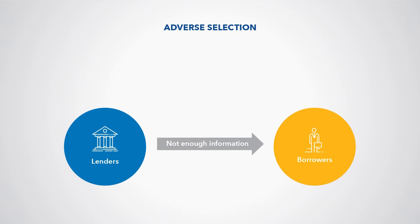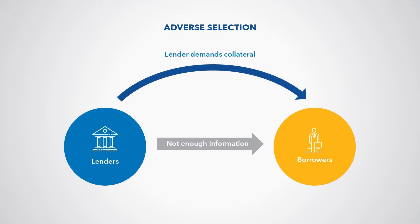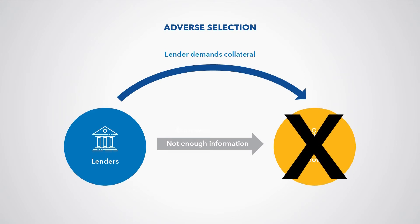How does this problem lead to financial exclusion? If lenders try to protect themselves by demanding collateral, then some low-risk individuals who are too poor to post the necessary collateral won't be able to borrow. Another example of adverse selection is the market for health insurance. Health insurers worry that only unhealthy people who know they will need expensive coverage will buy insurance, and the insurer may respond by not offering insurance products, which leads to exclusion.